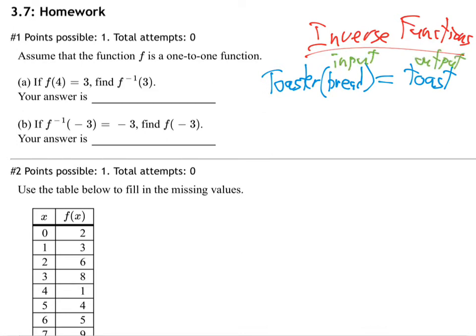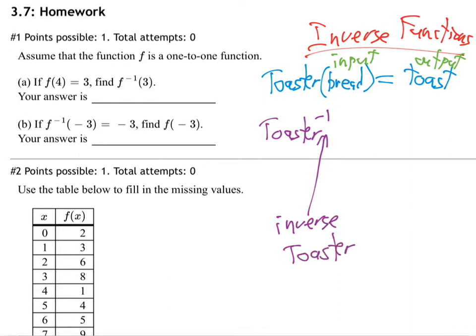You've done this probably many times. Now, how would an inverse toaster work? I'll write toaster to the negative 1 — that means inverse. An inverse toaster is going to switch inputs and outputs. That's what we mean by inverse functions today.